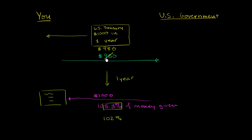So in the $950 price, you're essentially lending the government money at 5.3%. And at $980, you're lending the government money at 2%.